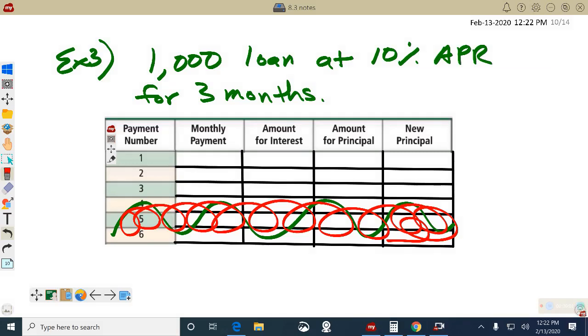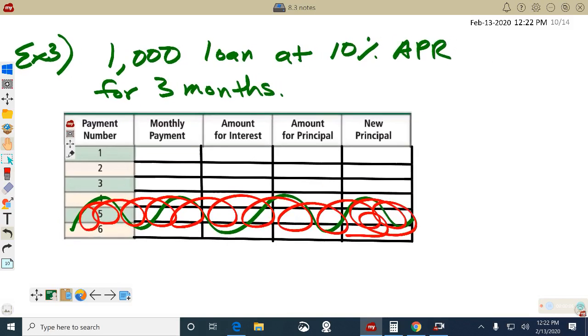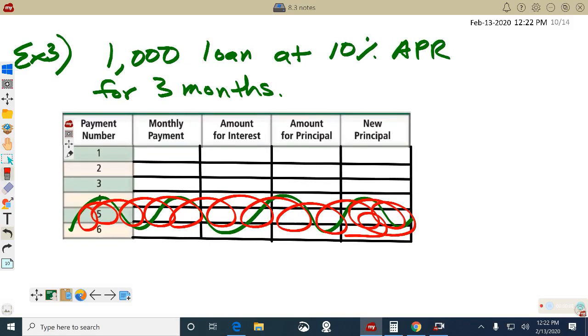What we'll do is find the monthly payment. $1,000, three months, what's a monthly payment? Well, that involves the P value, principal, the R value, the rate, and the N, so that we can use the monthly payment formula on the upper left.